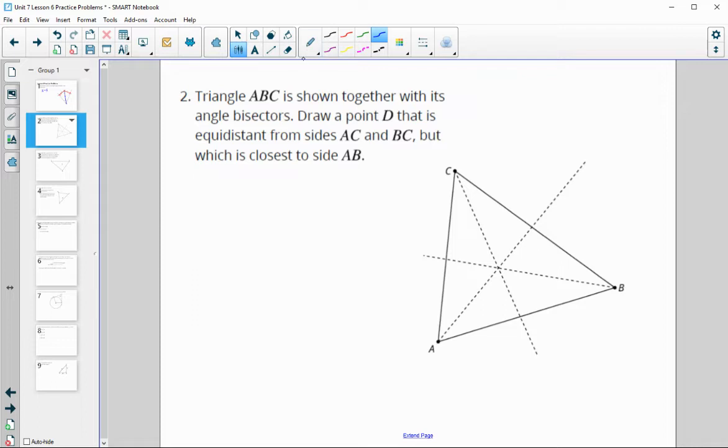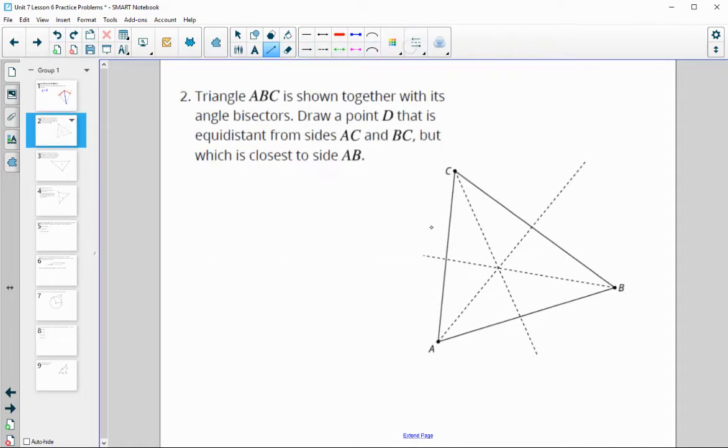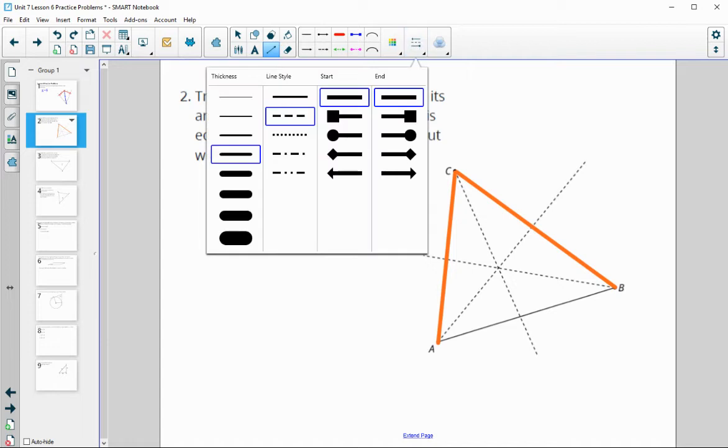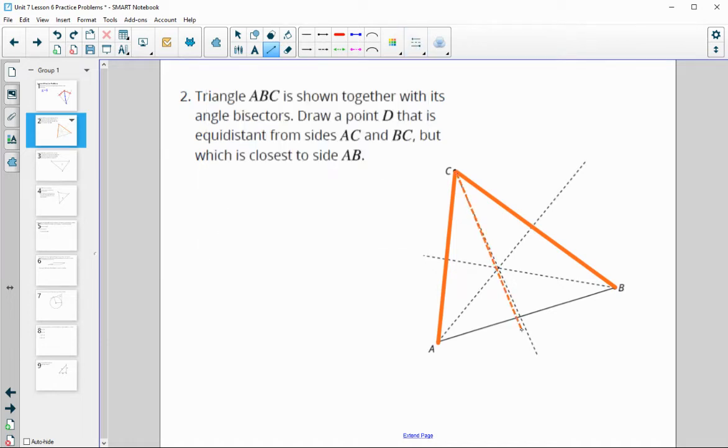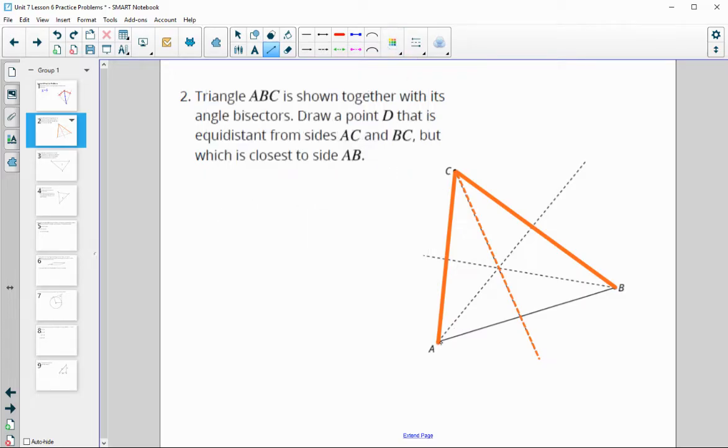Number two, triangle ABC is shown together with its angle bisectors. Draw a point D that's equidistant from sides AC and BC. Here's side AC, and here's side BC. We want the point to be equidistant from those two sides, which means it's on the angle bisector of it. All of these points are the same distance from these two orange lines, and we would like for the point to actually be closer to AB.